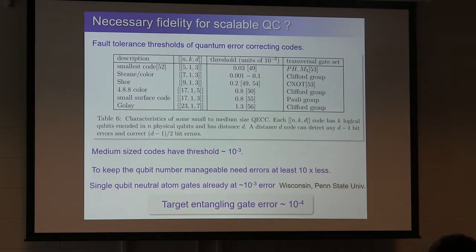If one thinks about scaling up towards quantum computing, one will need to have error correction at some point, and as a guidance, it's useful to look at what thresholds are for known quantum error correcting codes. So I've collected here some examples of small-scale codes, ranging from the smallest universal code, the five-qubit encoding, Steane code, Shor code, small color code, small surface code, Golay code, and these are the thresholds or pseudo-thresholds in units of 10 to minus 3. And roughly speaking, as the code gets larger, the threshold goes up, which makes things easier.